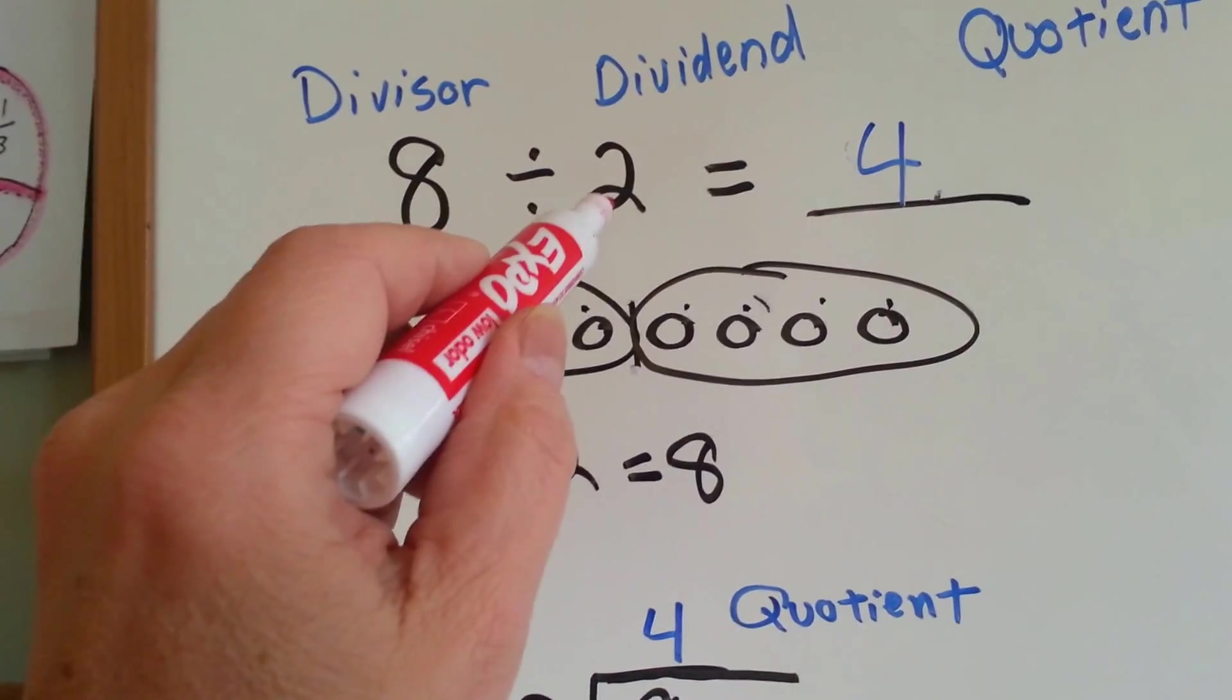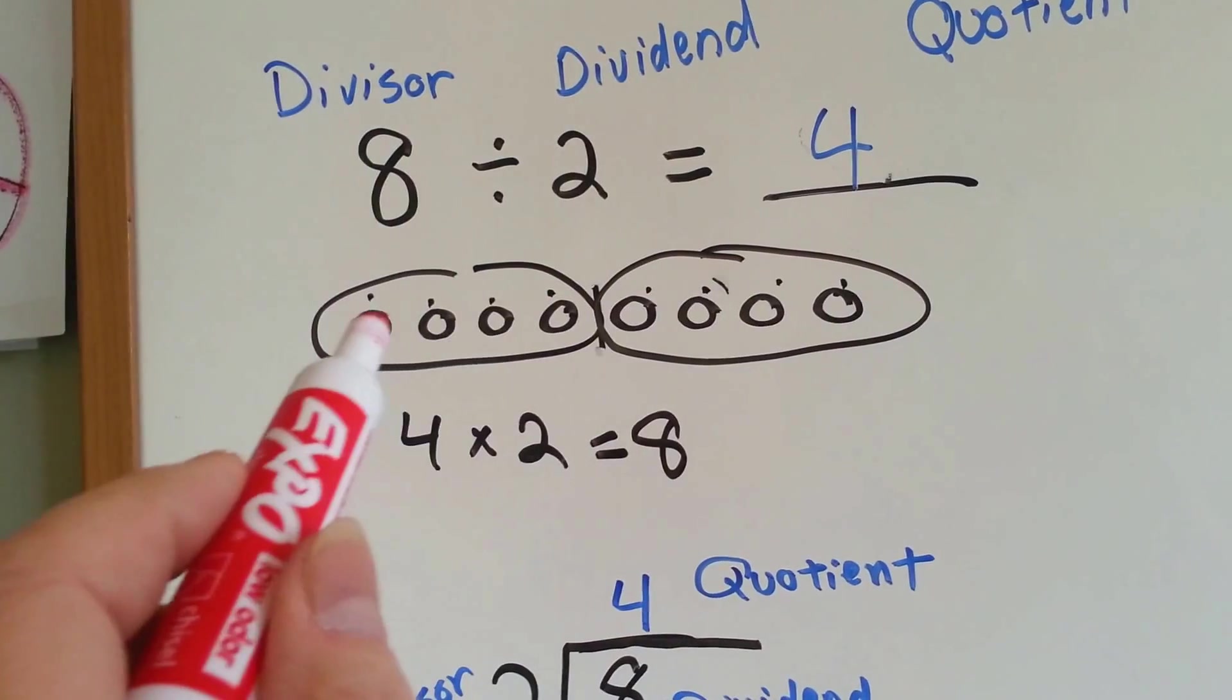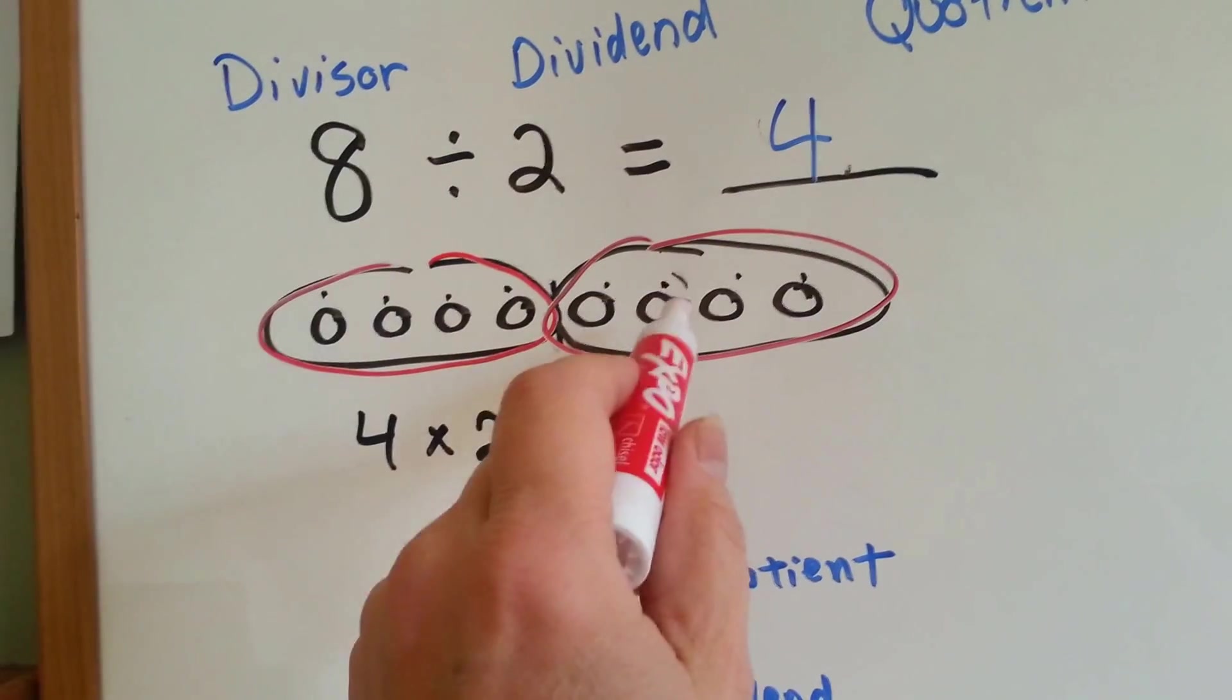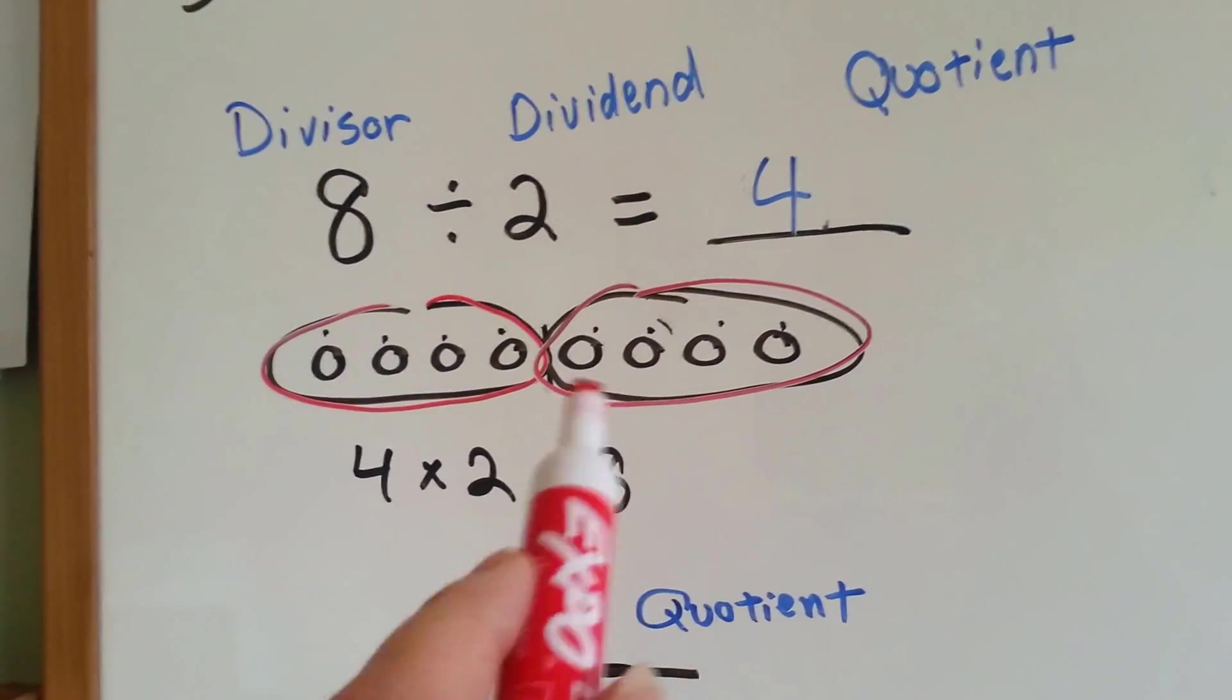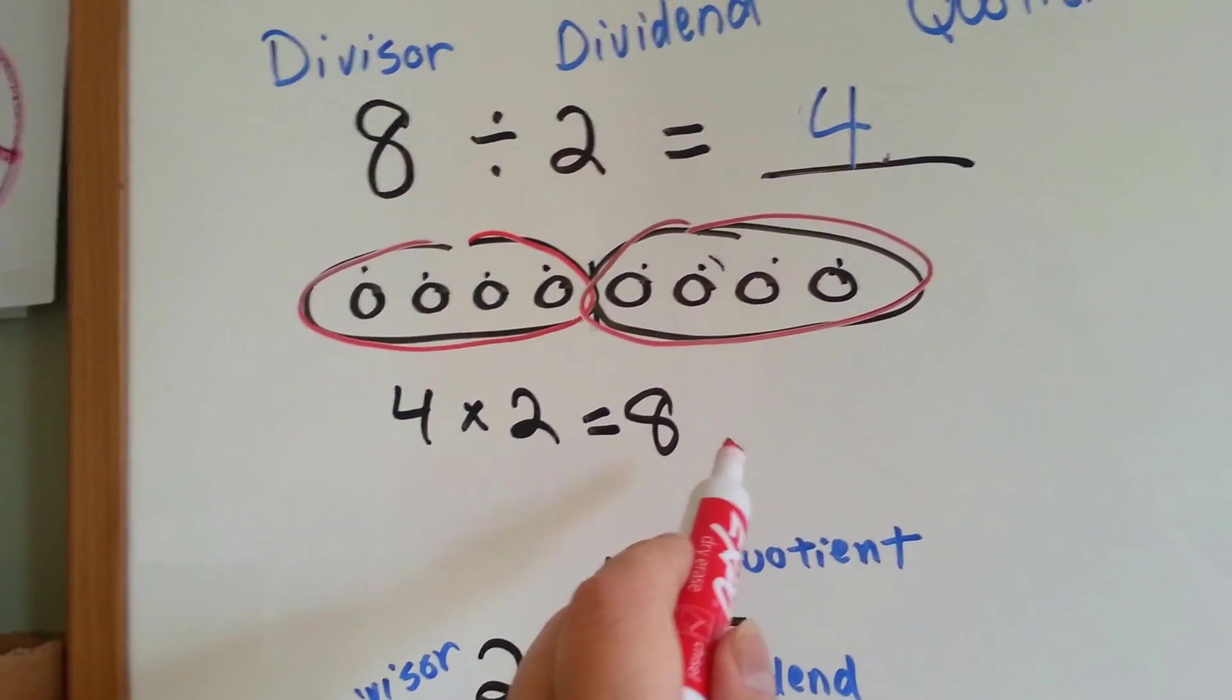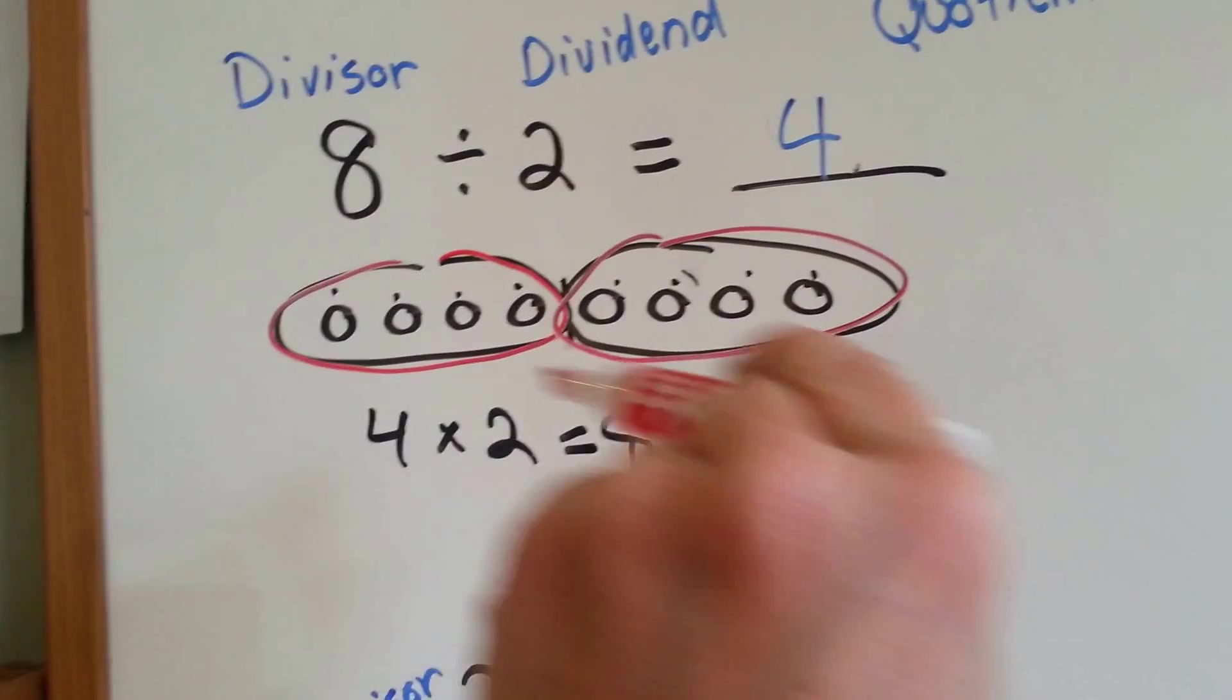8 divided by 2 equals 4. We took 8 circles and divided it into 2 groups. The 4 is how many is in each group. Here's how it's the inverse of multiplication. 4 times 2 equals 8. Division is going that way and multiplication is going that way.